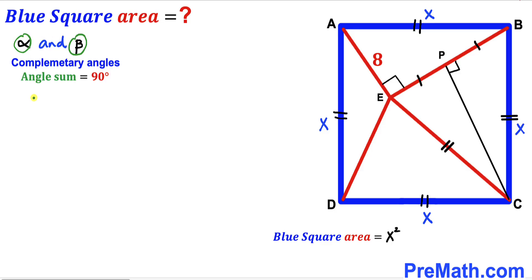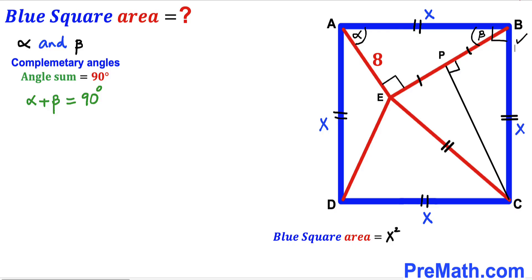Let's assume alpha and beta are two complementary angles, meaning alpha plus beta equals 90 degrees. Angle AEB is labeled alpha; since angle AEB is 90 degrees, the remaining angle is beta. Within the square's 90-degree corner, the angles are similarly assigned as alpha and beta.